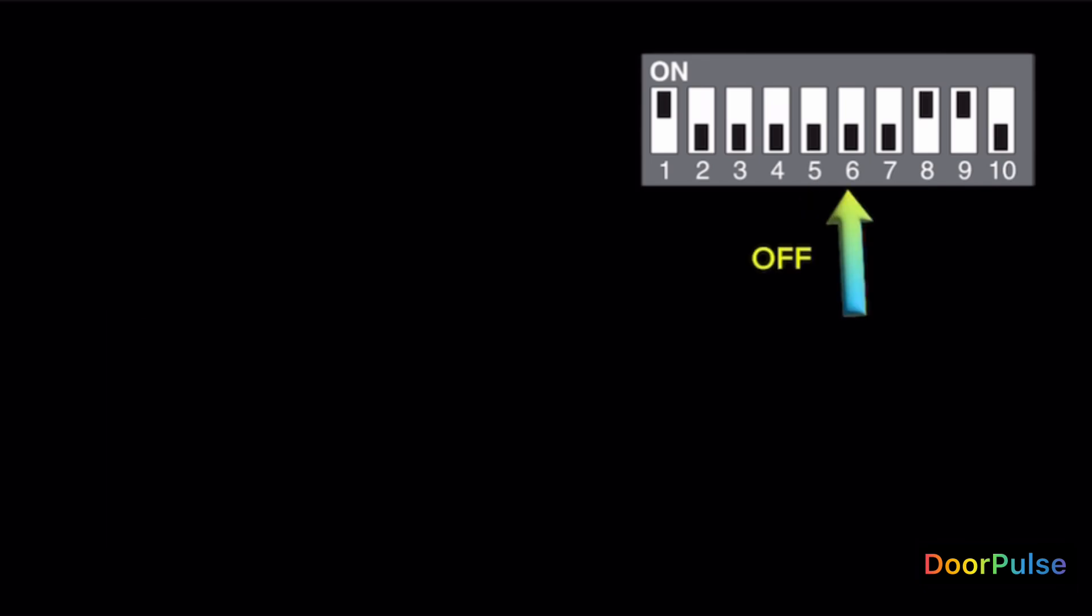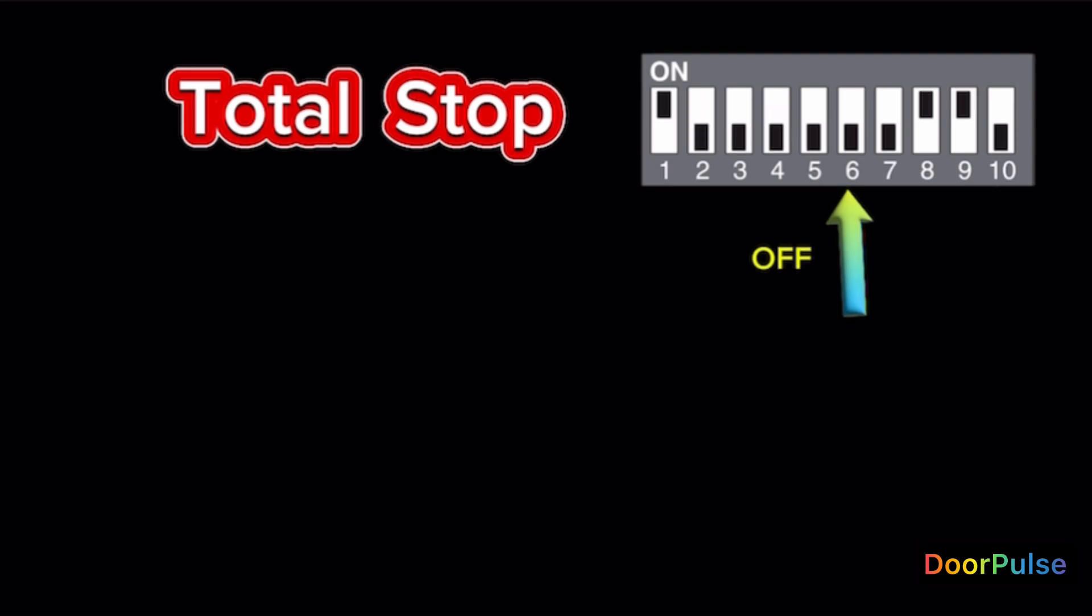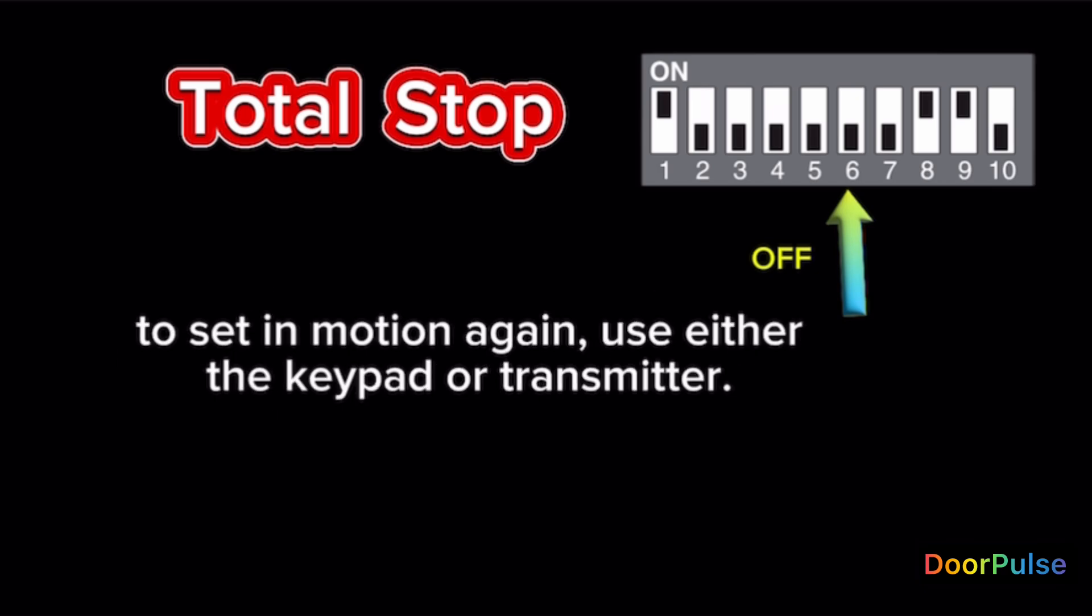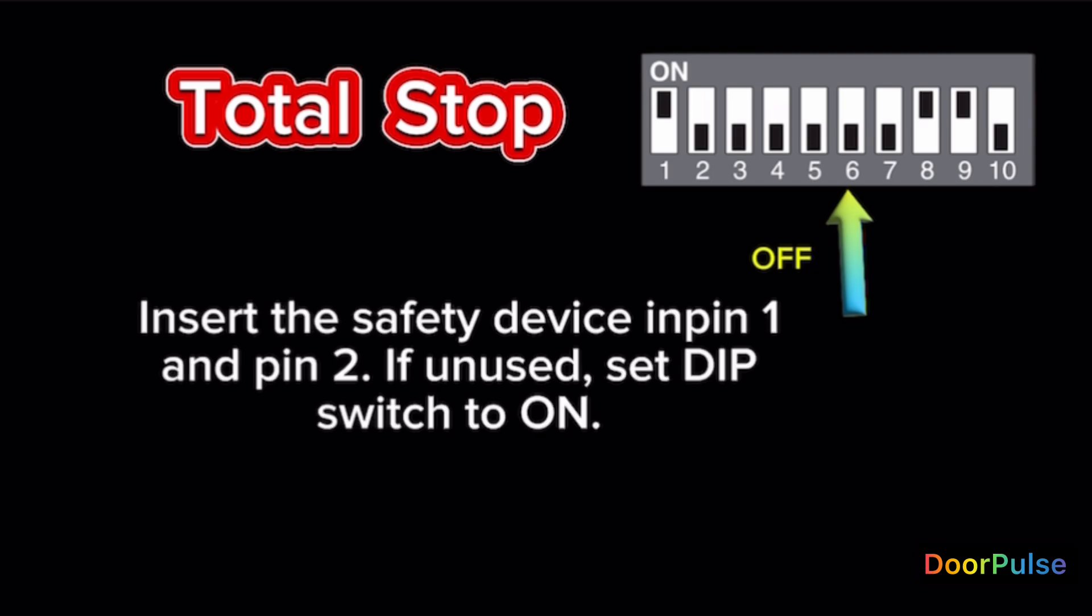Switch 6 OFF. Total stop. This function stops the boom and consequently excludes any automatic closing cycle. To set in motion again, use either the keypad or transmitter. Insert the safety device in pin 1 and pin 2. If unused, set DIP switch to ON.